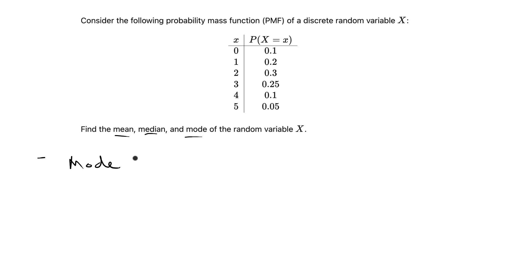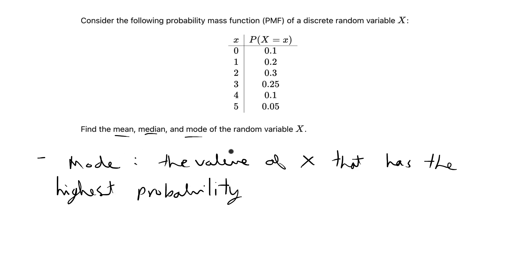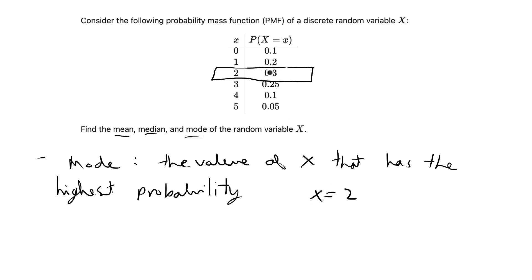Starting with the easiest one, I'm first going to find the mode of x. The mode is defined as the value of x that has the highest probability. I can just look at the table and find the value with the highest probability without calculating anything additional. The probabilities are 0.1, 0.2, 0.3, 0.25, 0.1, and 0.05. The mode is x = 2 because that's the value that is most probable — it has probability 0.3, which is the highest in the table.